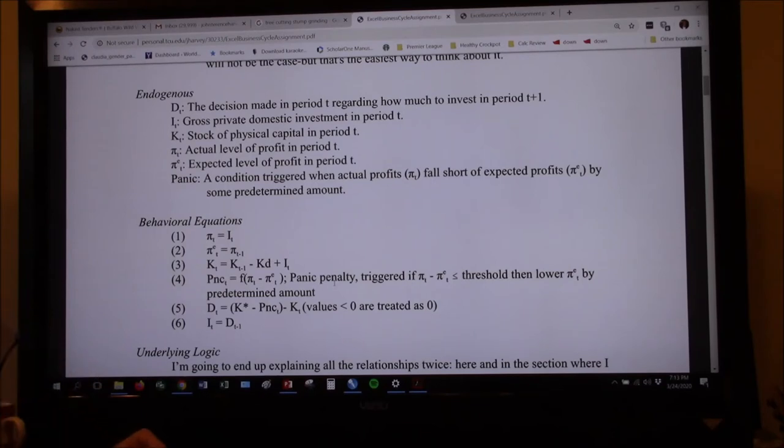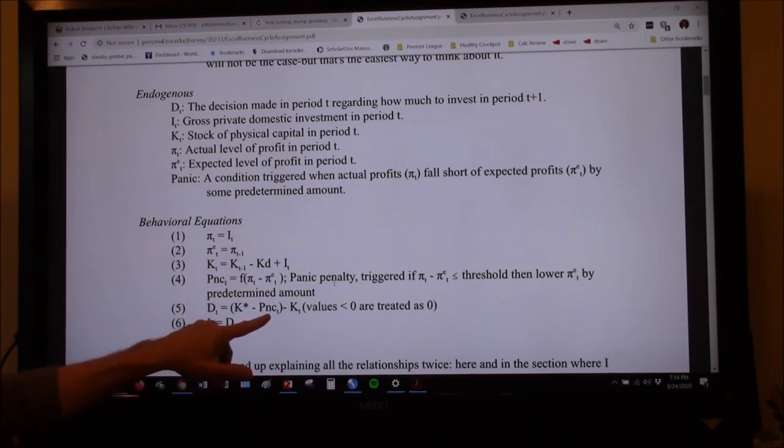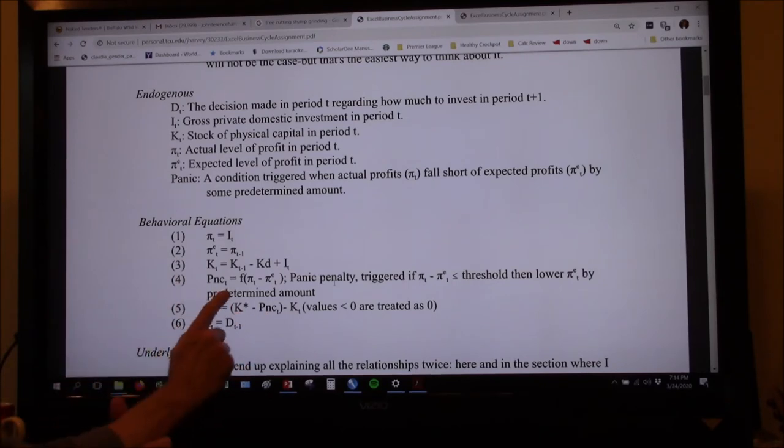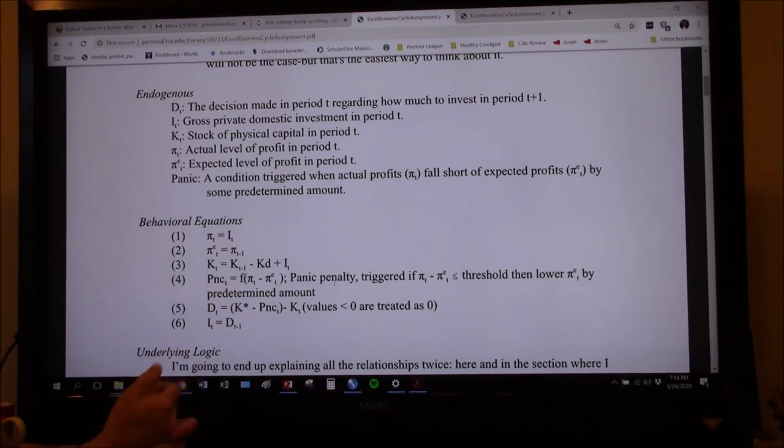Now, it's also going to be the case as we get into the model here that we're going to say that firms can't build all they want at once, but that is what they want. They'd like to get to K star, but they might not be able to get all the way there in one time period, but that's what they're thinking. Now, the panic variable here is a sudden adjustment to what my target is. Let's say that in this period, I discovered that the profits were not what I thought they were going to be. Well, crap. So now I panic.